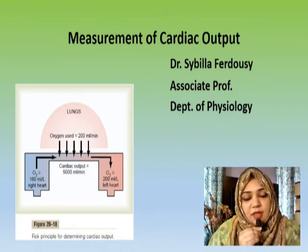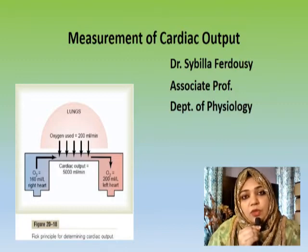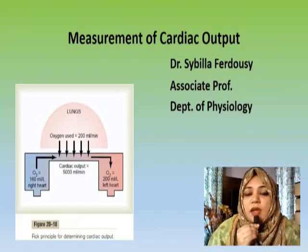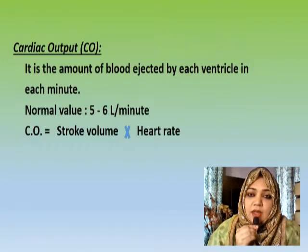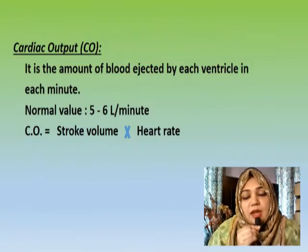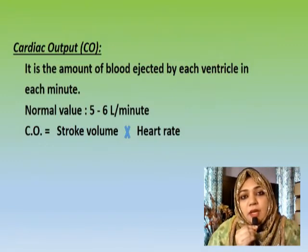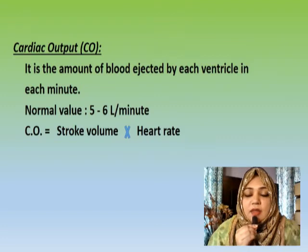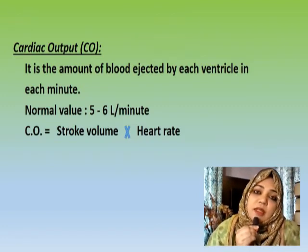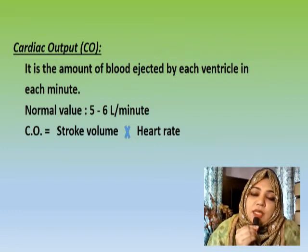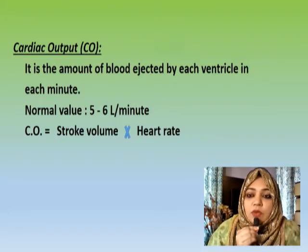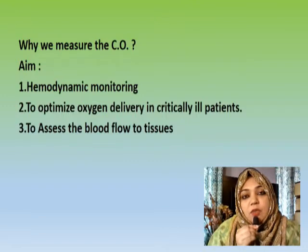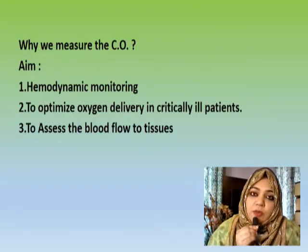Assalamualaikum, welcome to your online class. In this video I'm going to discuss about measurement of cardiac output. As you already know, cardiac output is the amount of blood ejected by each ventricle in each minute. This means that every minute our heart is pumping out five to six liters of blood, and we can determine cardiac output by multiplying heart rate into stroke volume.